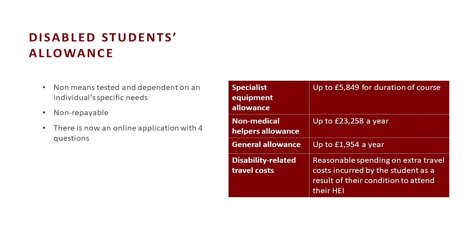Disabled students allowances are not means tested and dependent on an individual's specific needs. They're not repayable — in the form of a grant — and you apply through the general student finance application. You could apply for a specialist equipment allowance of up to £5,849 for the duration of the course (not per year), a non-medical helpers allowance of up to £23,258 a year, a general allowance of up to £1,954 a year, or coverage for specific disability-related travel costs.